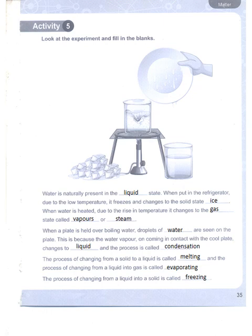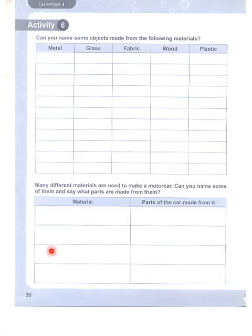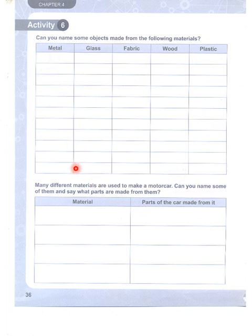Activity six: name some objects made from the following materials — metals, glass, fabric, wood, and plastic. I have listed some examples; you can add more. For metal, I have listed: pipes, bells, needles, nails, wires, cars, trains, knives, ships, gates, and cages.